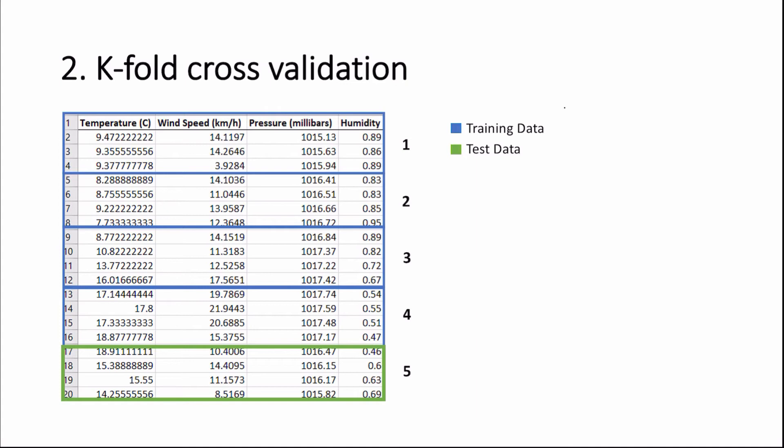So the second method of splitting our data is known as k-fold cross-validation. So this works by first splitting our data into k-folds. And a fold usually consists of around 10 to 20% of data. So in this case, we've split our data into five folds. The algorithm then selects one of the folds. So in this case, it selected the fifth fold to be used as our test data, and the remaining folds to be used as our training data.